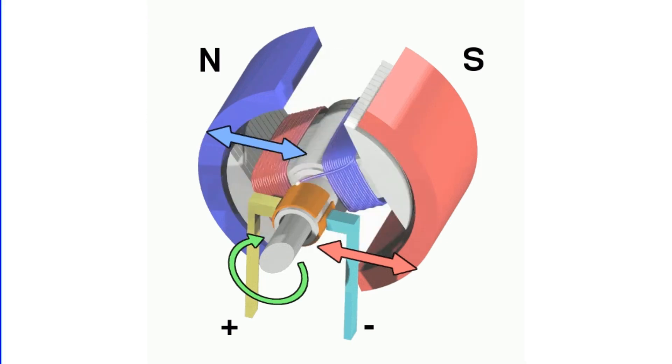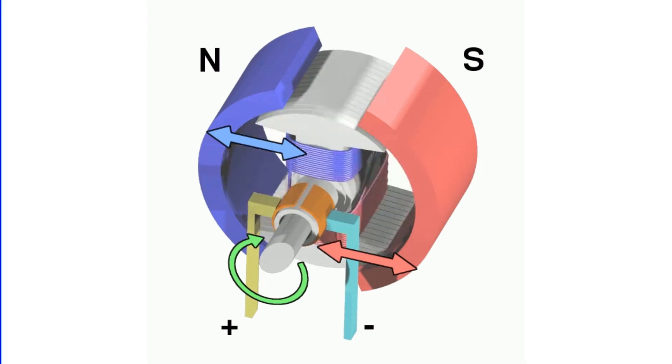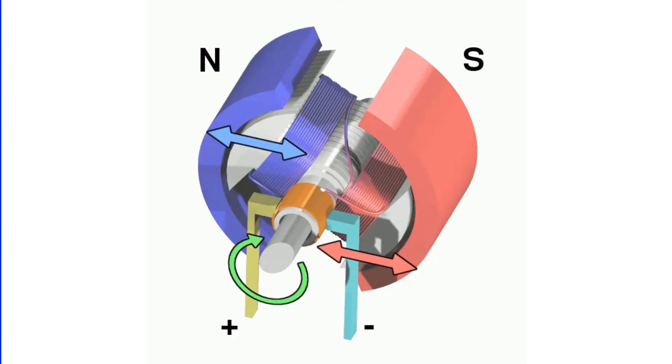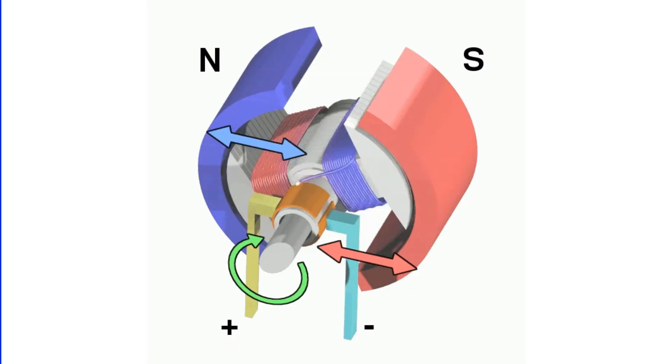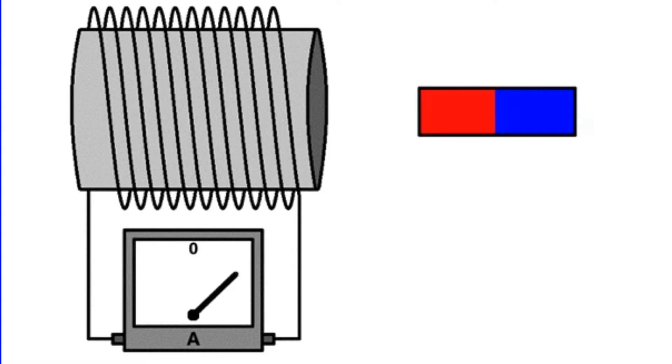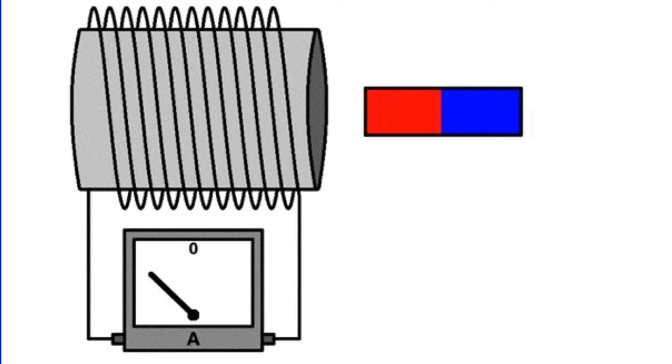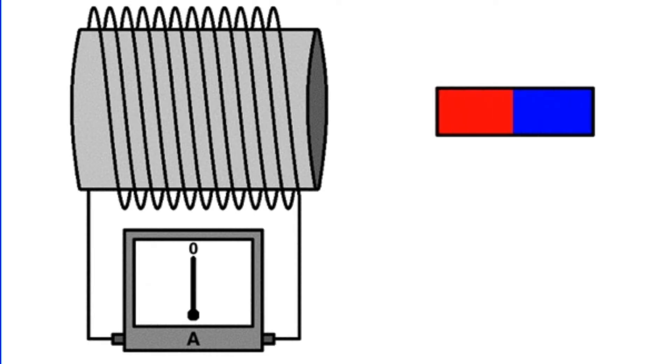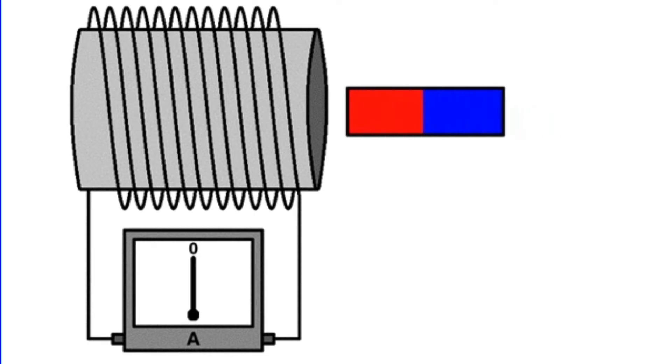A DC generator is an electrical device that converts mechanical energy into electrical energy in the form of DC power. It operates on the principle of electromagnetic induction, which states that an electromotive force, EMF, is induced across the ends of a conductor when it moves through a magnetic field. This induced EMF generates a current if the conductor is part of a closed circuit.